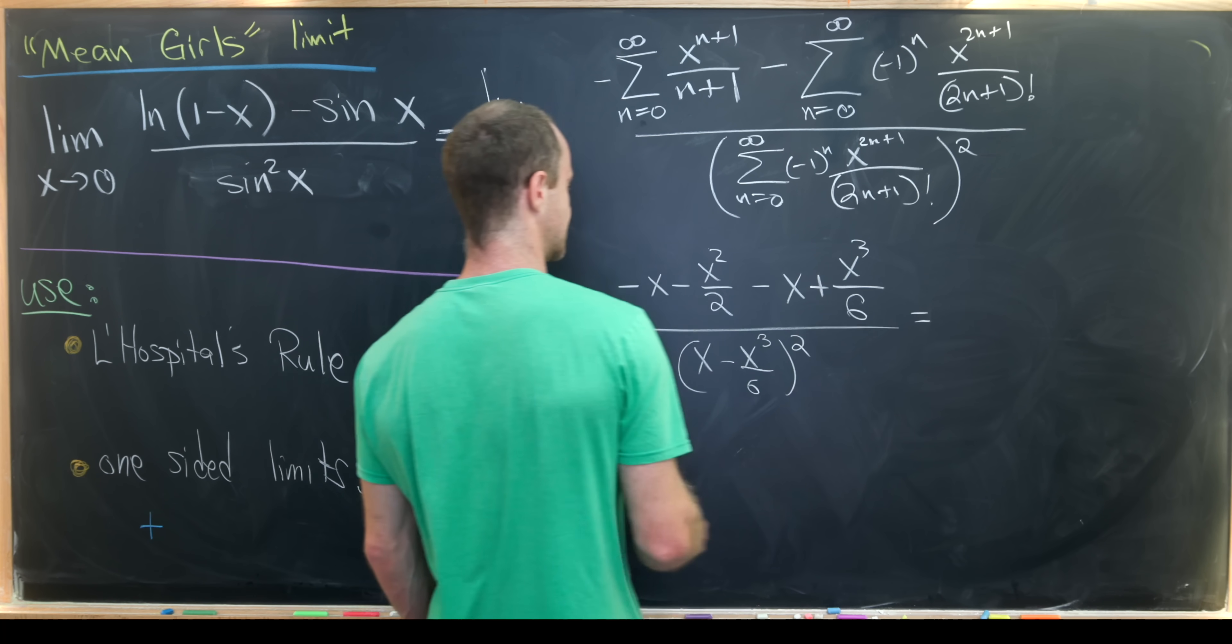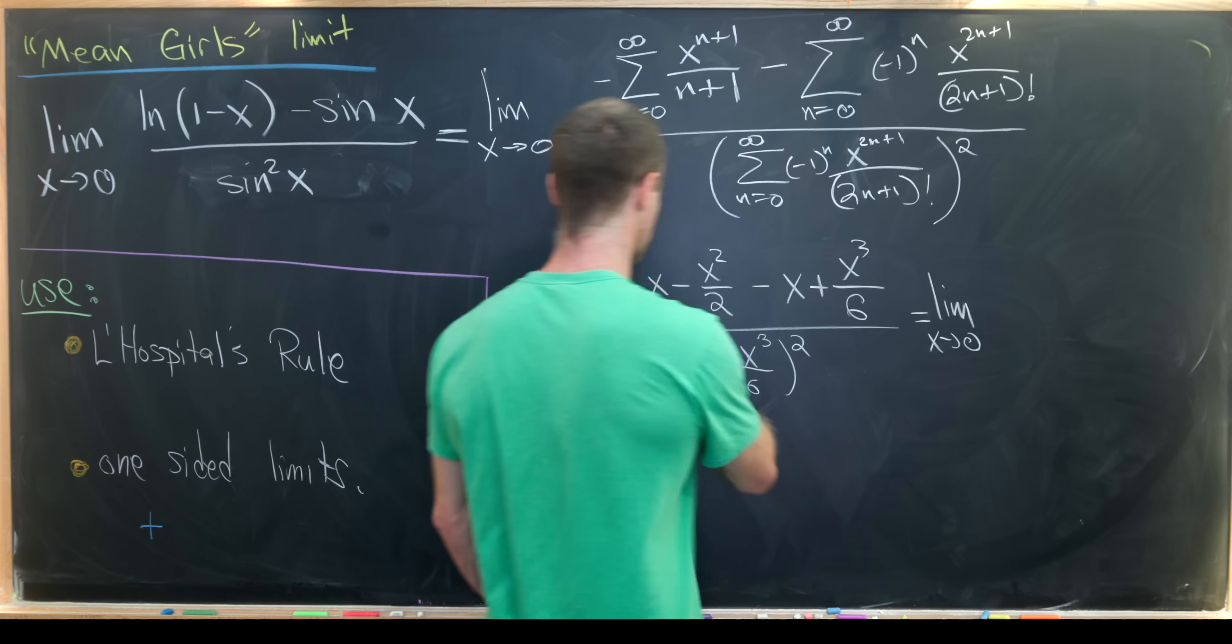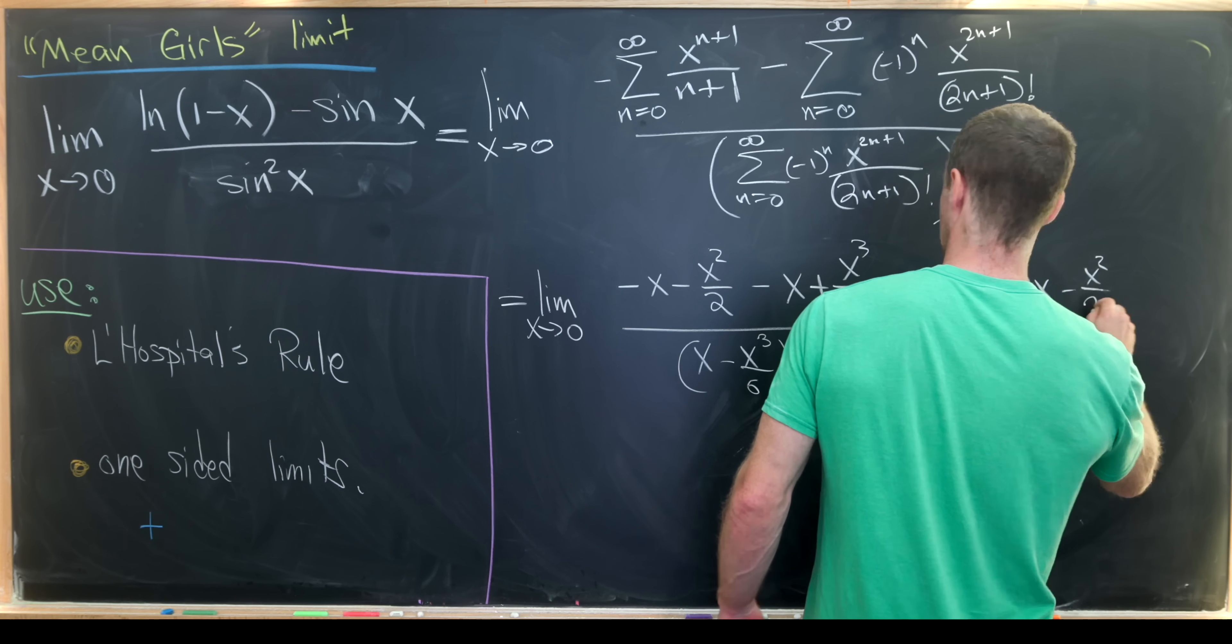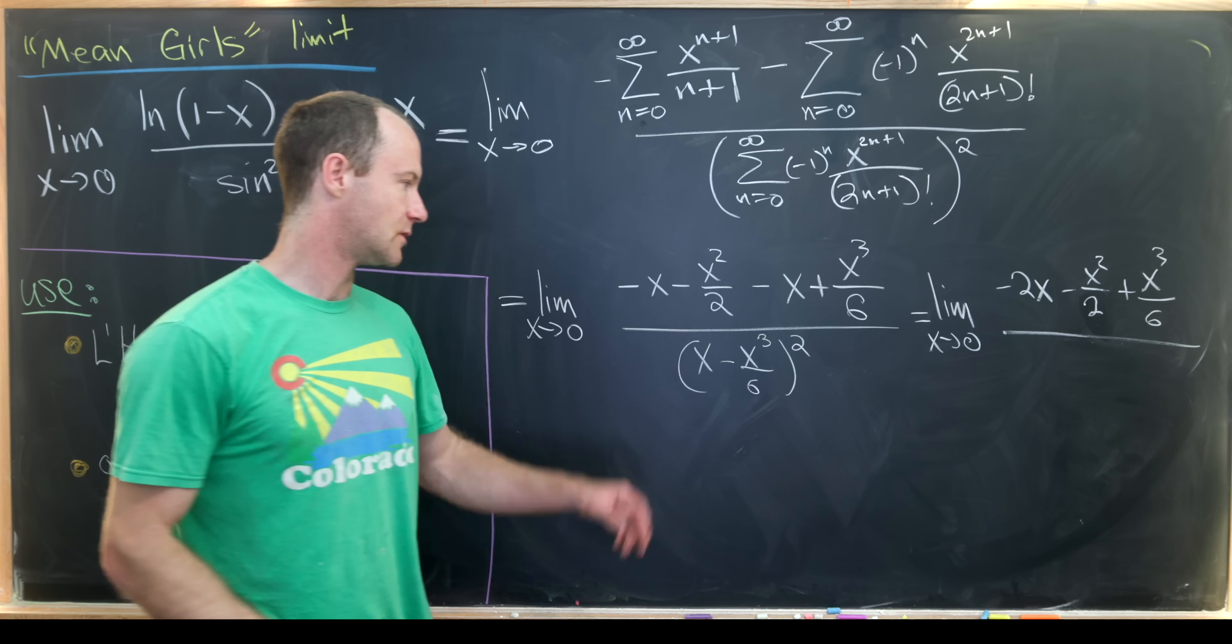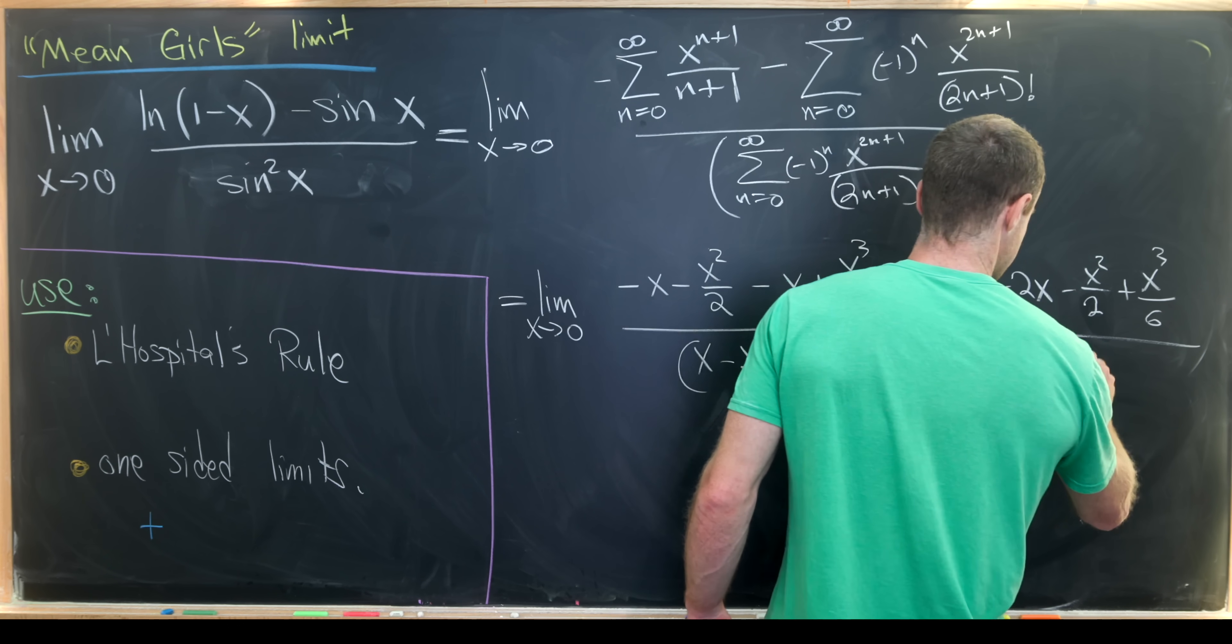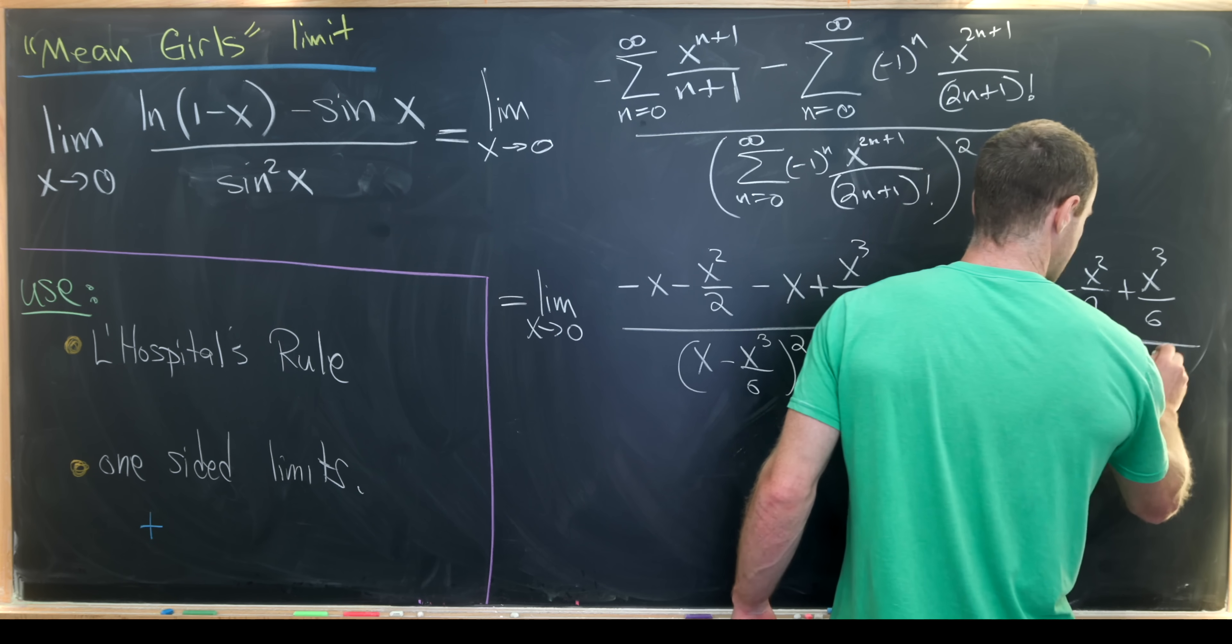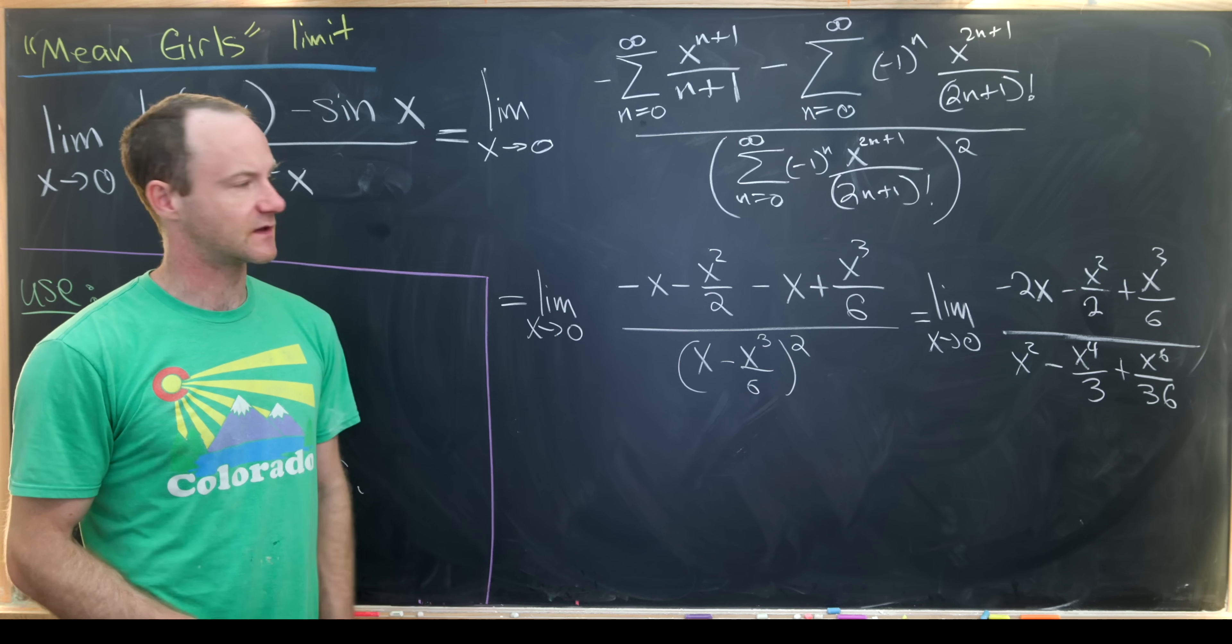So let's see how this simplifies. In the numerator, we have minus 2x and then minus x squared over 2 and then plus x cubed over 6. And then we can multiply out the denominator and give us x squared minus x to the fourth over 3, that's what we get from the cross terms, and then plus x to the 6 over 36.